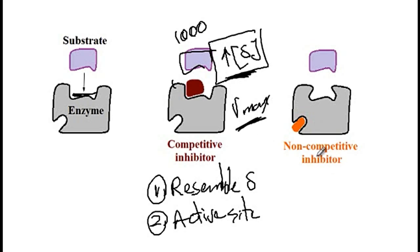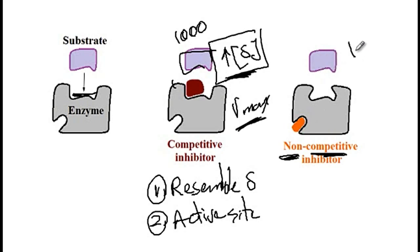Versus the non-competitive inhibitor: no matter how much you increase the concentration of the substrate, as the name implies — non-competitive — they do not compete with each other. So no matter how much you increase the concentration of the substrate, Vmax drops with a non-competitive inhibitor.